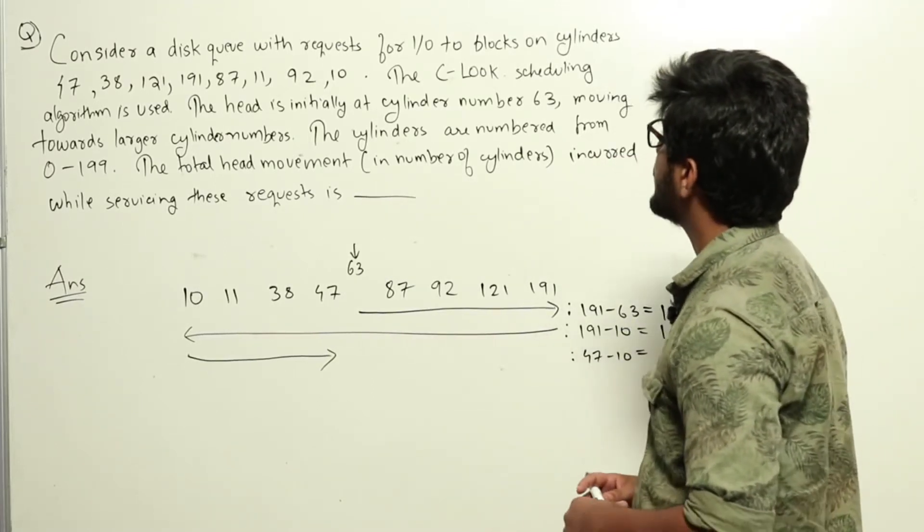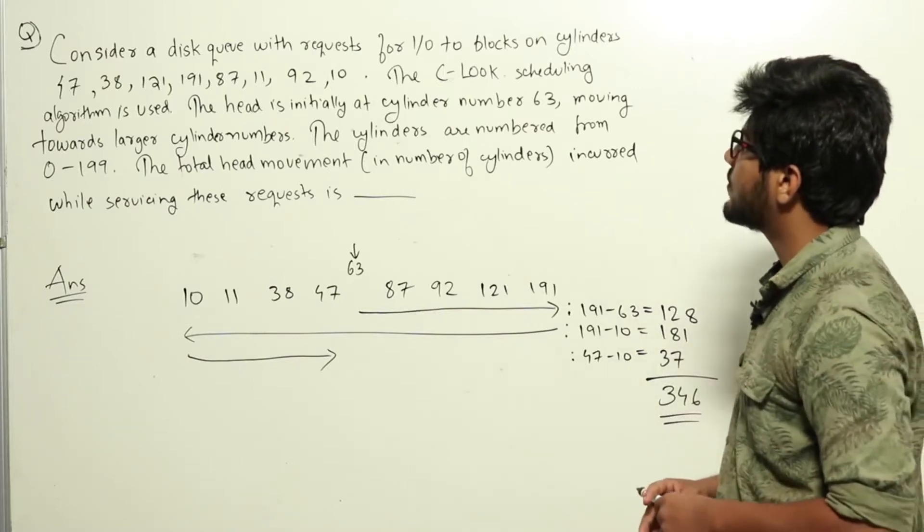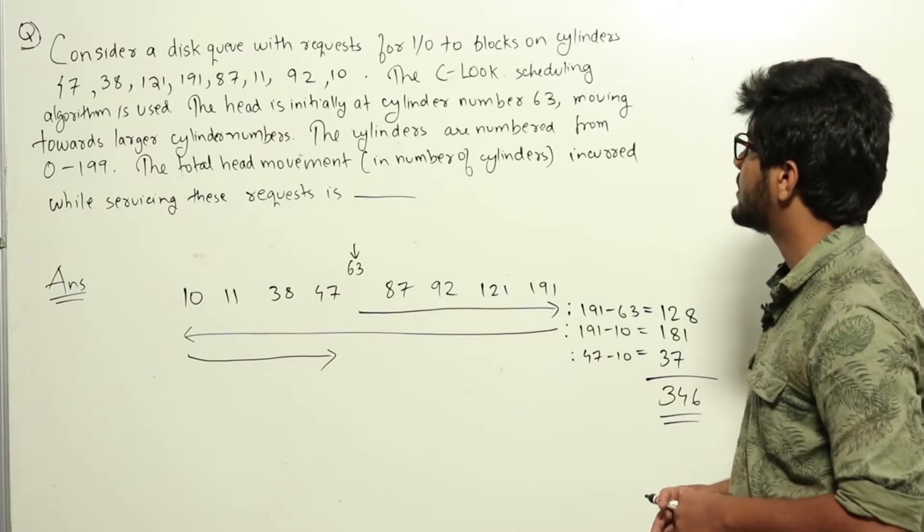Consider a disk queue with requests for input-output to blocks on cylinders 47, 38, 121, 191, 87, 11, 92, and 10.